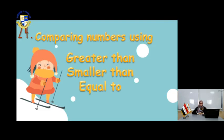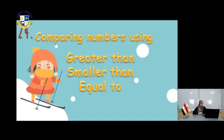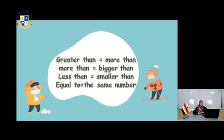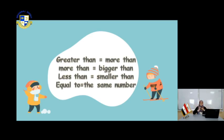In this page, we will talk about comparing numbers. We will talk about greater numbers, smaller numbers, and equal — greater than, smaller than, and equal. Greater than means bigger than, means more than. Less than means smaller than. And when you say equal, you mean the same number.